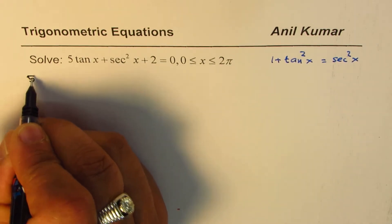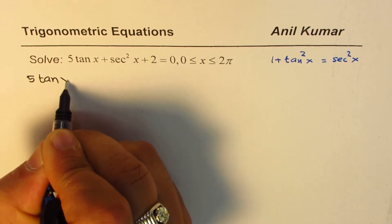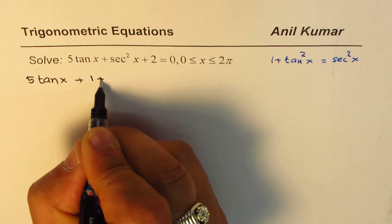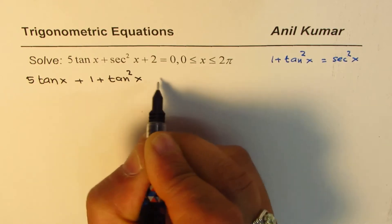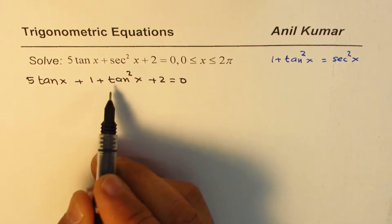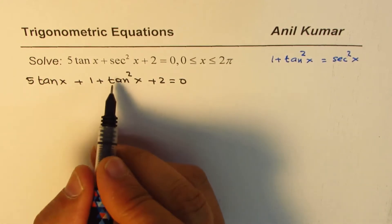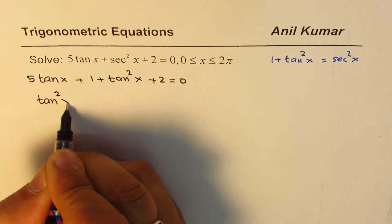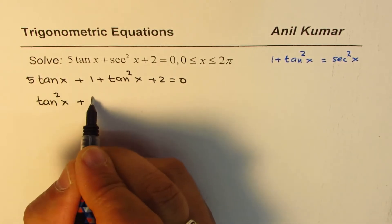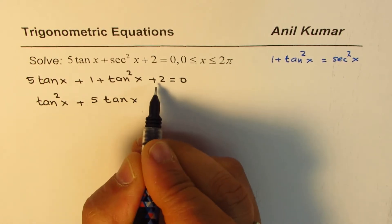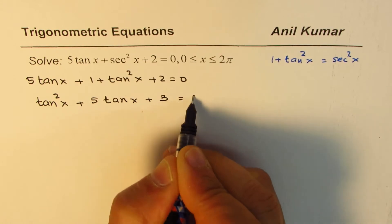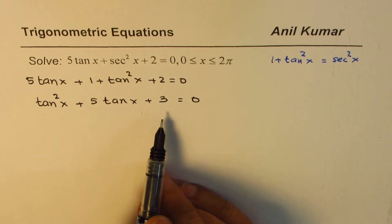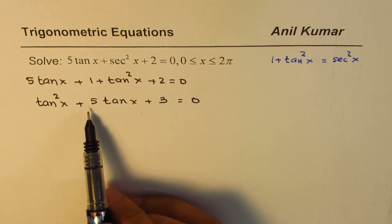Begin by writing the equation: 5tan(x) + (1 + tan²(x)) + 2 = 0, substituting 1 + tan²(x) for sec²(x). Rearranging with highest degree first gives tan²(x) + 5tan(x) + 3 = 0.